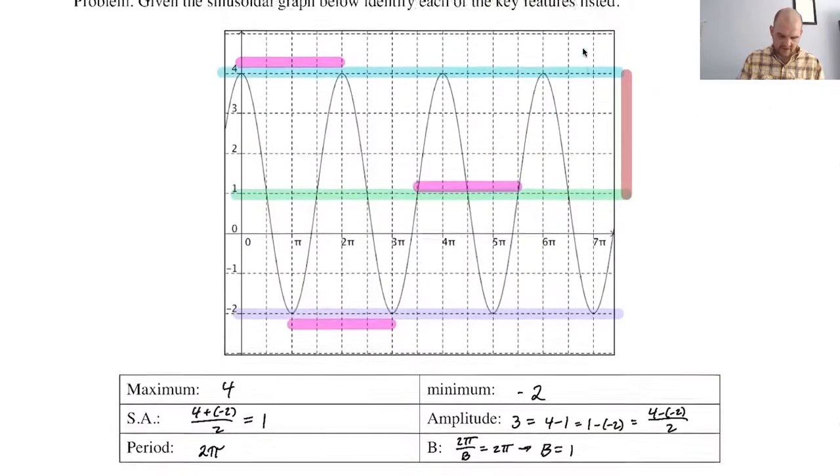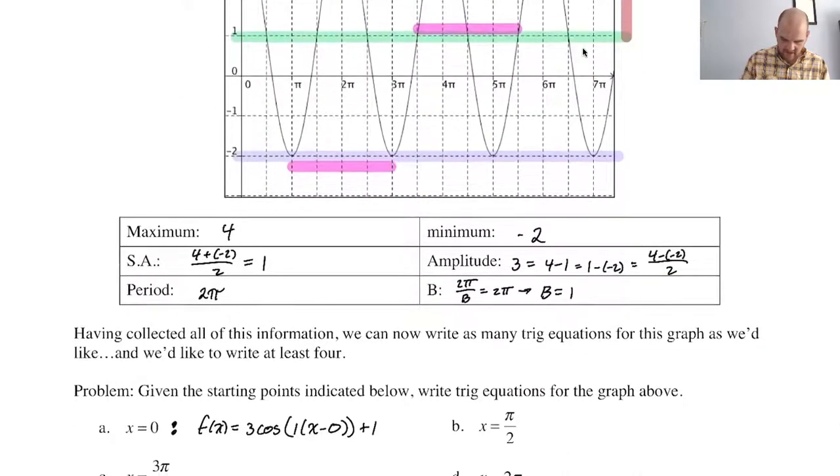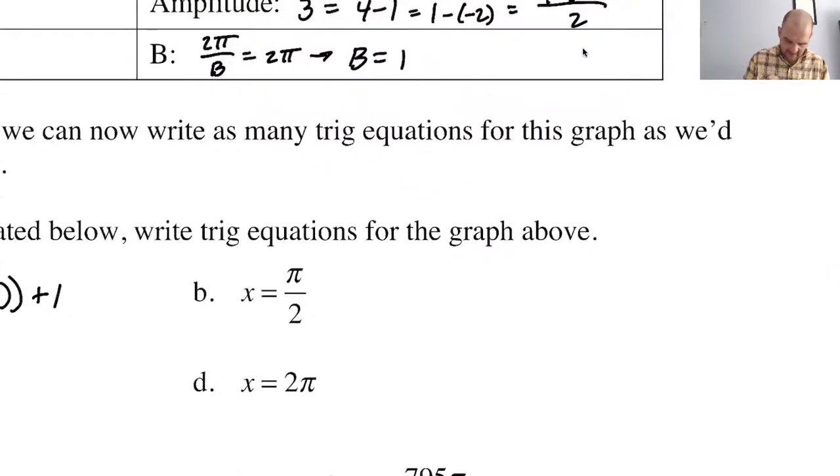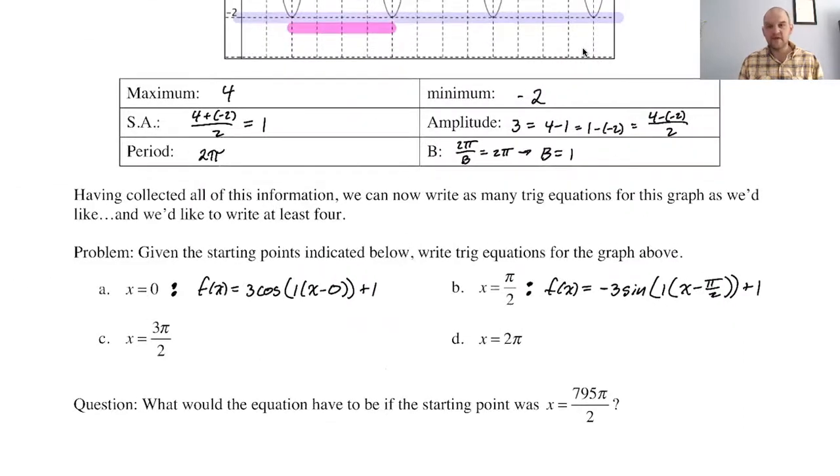What if we start at pi over two? So pi over two is here, starting at an intercept, going to a minimum. Which trig function does that? Well, it's negative sine. So negative sine, which means our amplitude is still three, but now we're using negative. So here we'll say f of x is going to be negative three. It's a sine graph. B is one. X minus our starting point is pi over two. And then the sinusoidal axis is one. So plus one. So if we graph these two, they will completely coincide and they will give us the graph that we're looking at above.